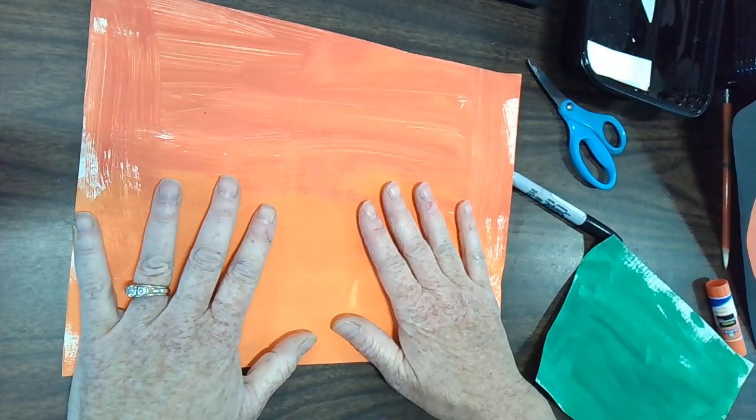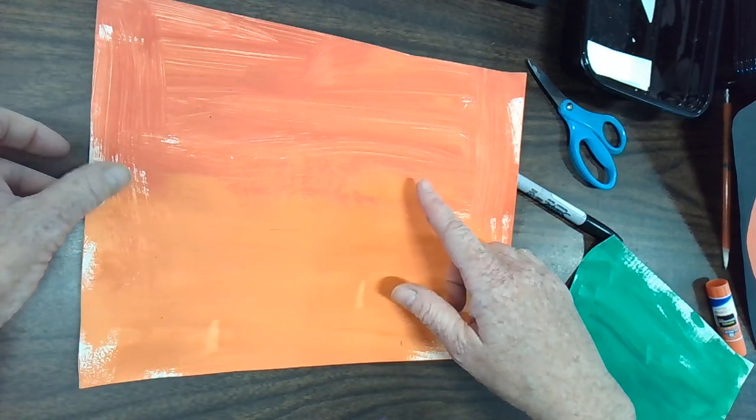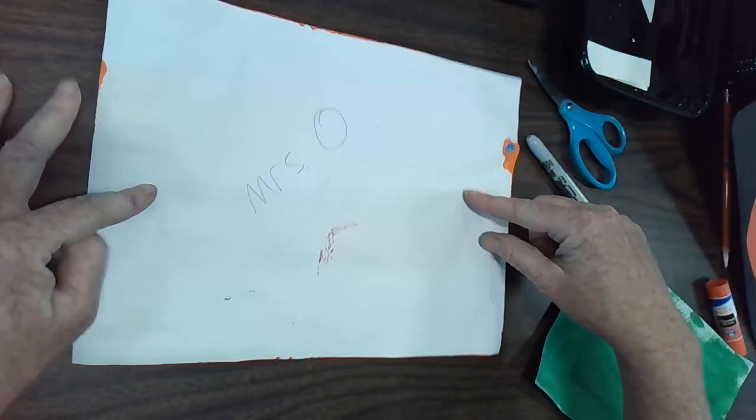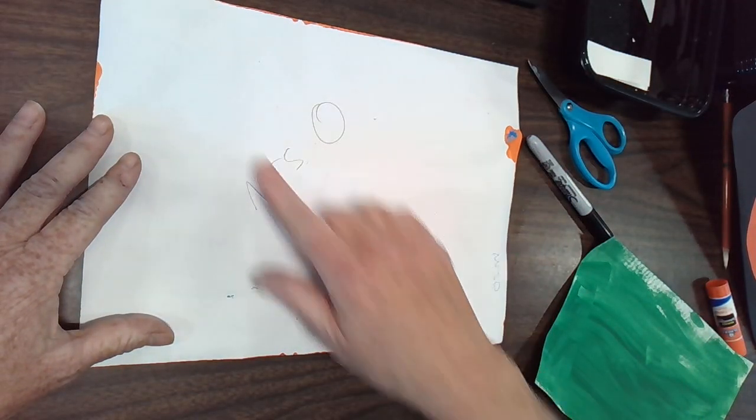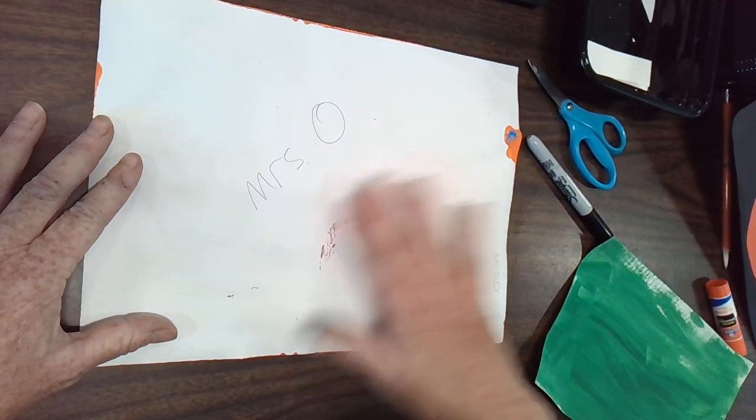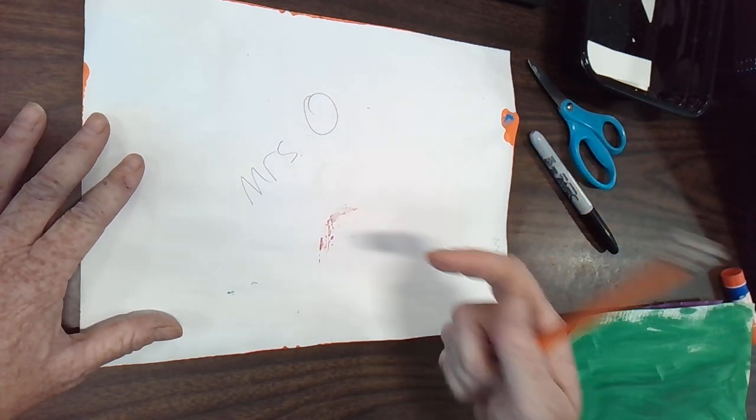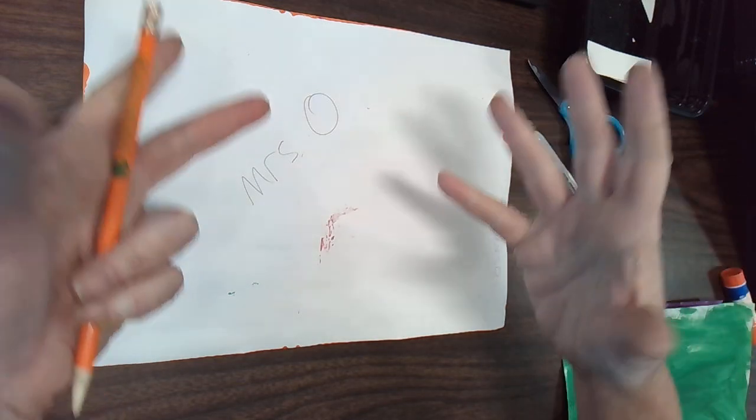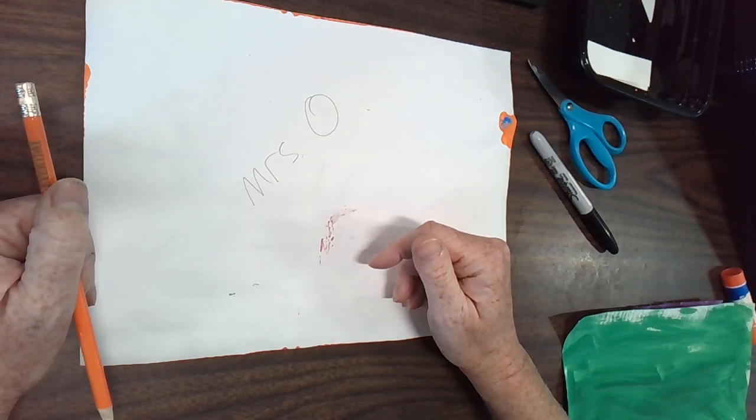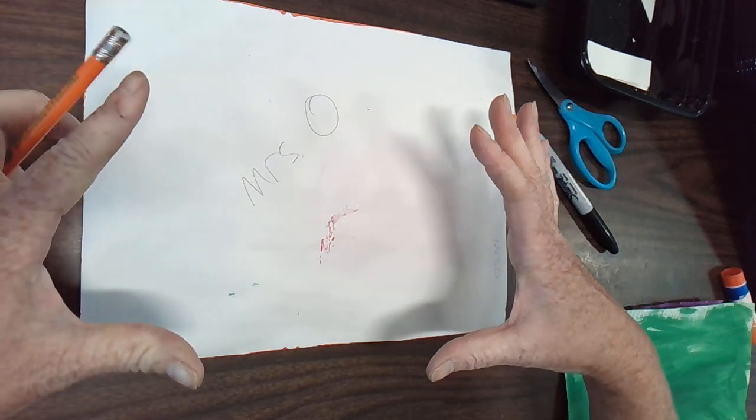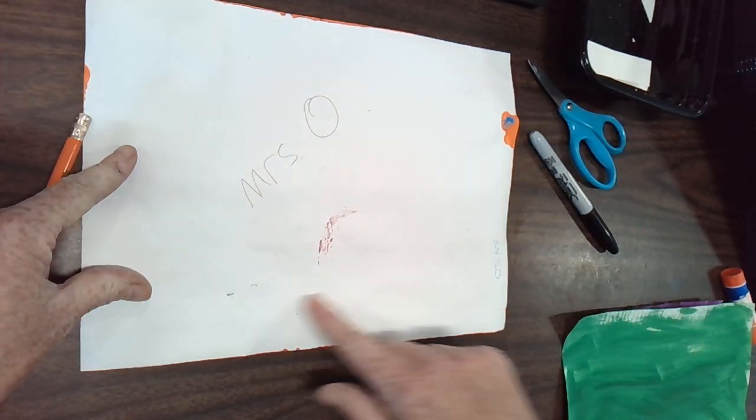We're going to begin with our orange paper and instead of drawing our pumpkin shape on the front, on the painted side, we're going to flip it over and draw it on the back. It doesn't matter if your name is on there or if there's paint pieces on there. You're going to take your pencil and you're going to be drawing a large circle. Now I know when I've looked at real pumpkins, I've never seen a pumpkin that's perfectly round, so we don't need to worry about it being a perfect circle.